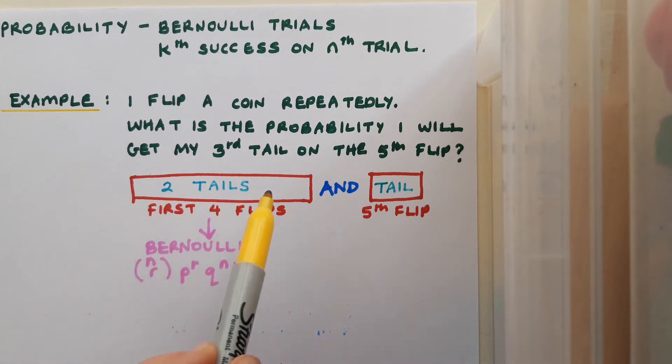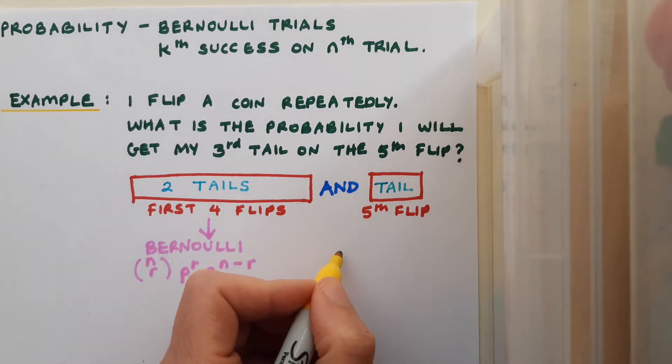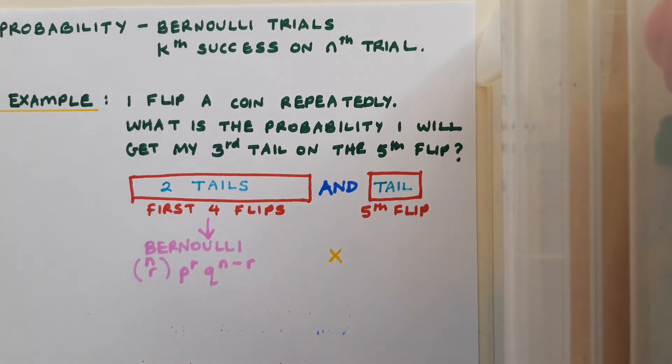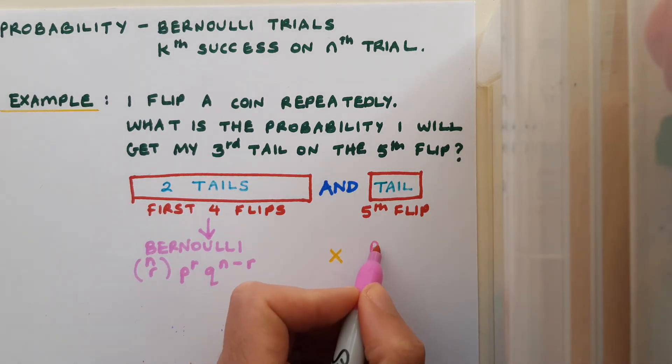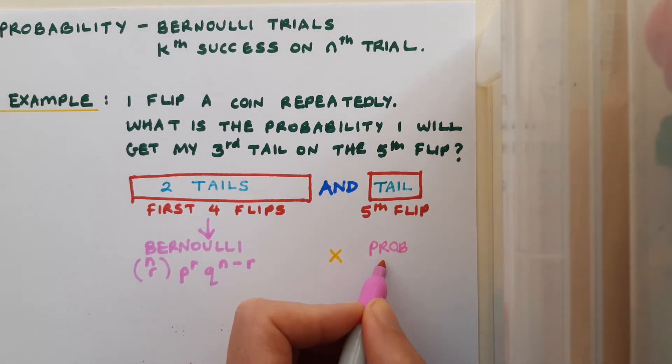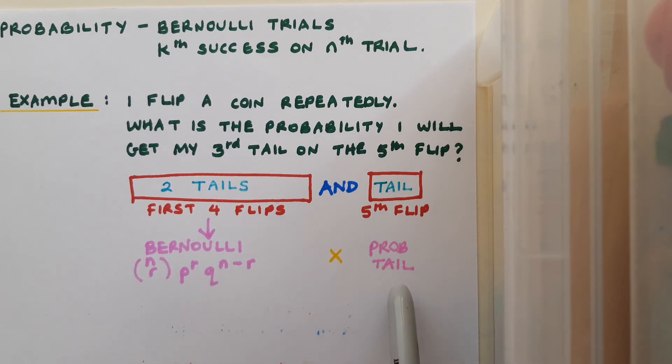So that's going to do with the first four flips. But now I want the fifth flip to happen as well, so I want this as well. Notice I've written in the word and, and of course the word and in probability means that I want to multiply. So I'm going to get my result for my first four flips, and then I want to multiply it by what I want to happen on the fifth flip, which is to achieve a tail. So I'm simply going to put in the probability of getting a tail on any individual flip for that calculation. So it'll be my Bernoulli formula, filled in and calculated, times the probability of getting tails on this particular flip.